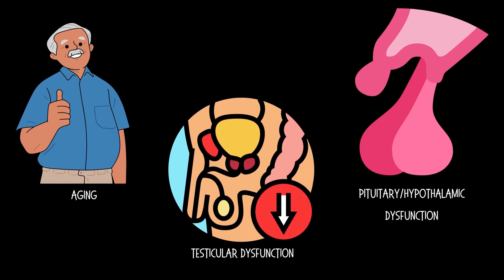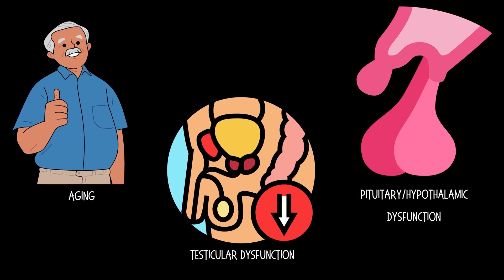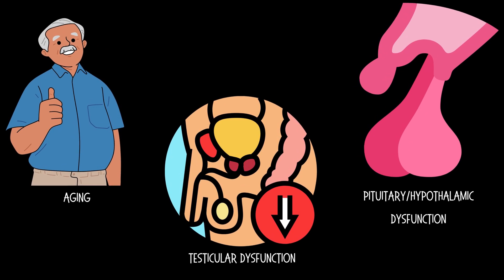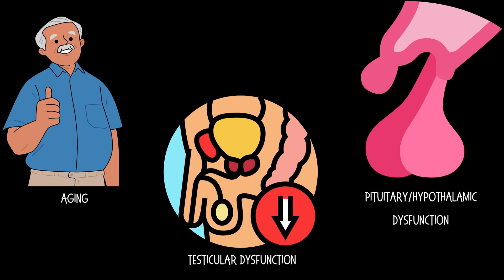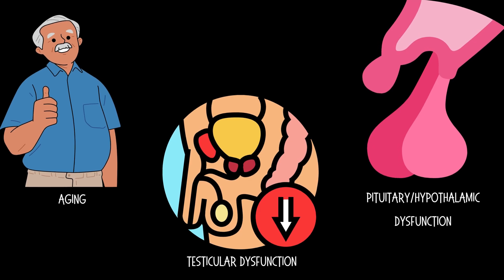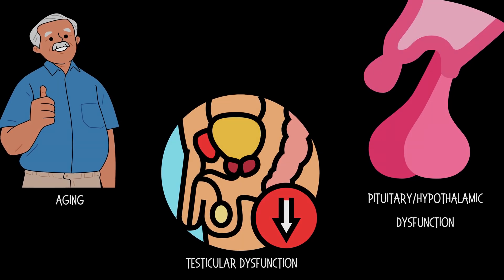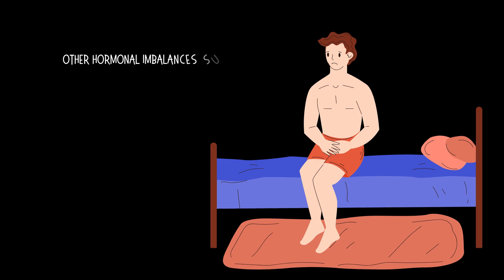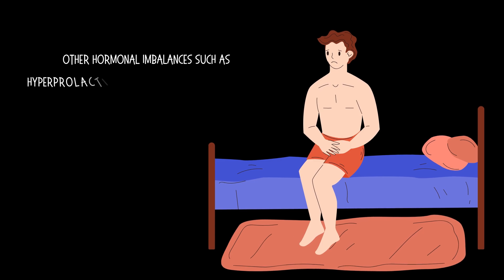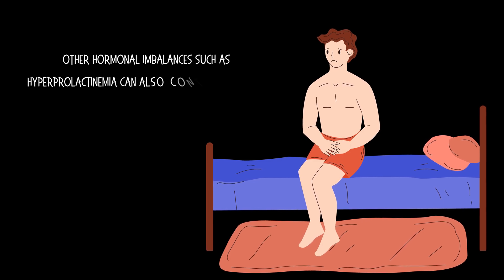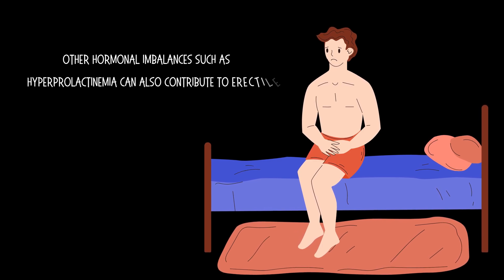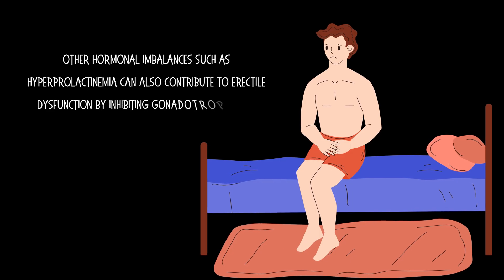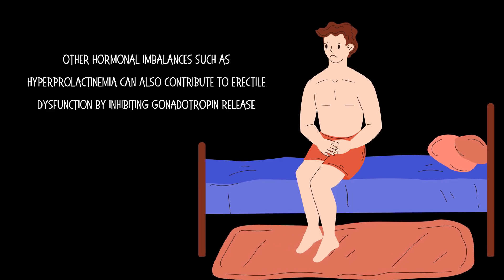testicular dysfunction, or due to secondary causes such as pituitary or hypothalamic dysfunction. And finally, other hormonal imbalances such as hyperprolactinemia can also contribute to erectile dysfunction by inhibiting gonadotropin release.